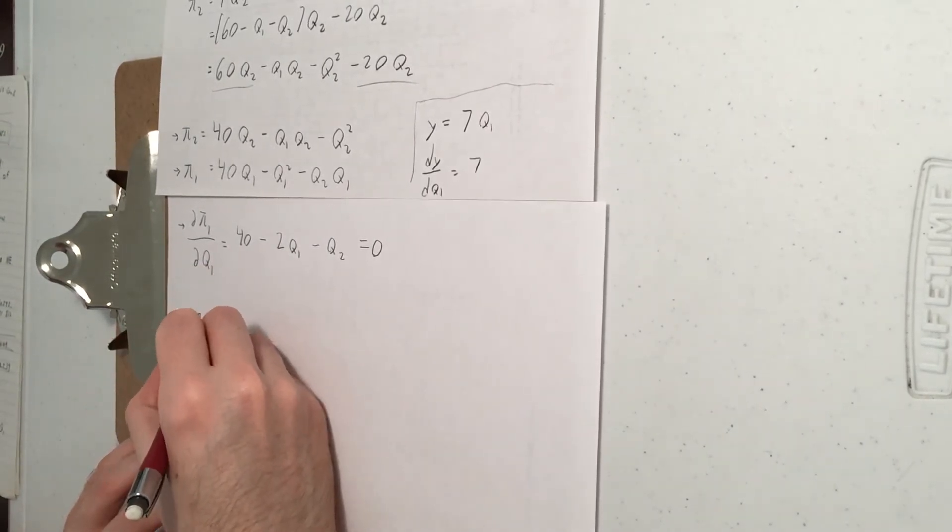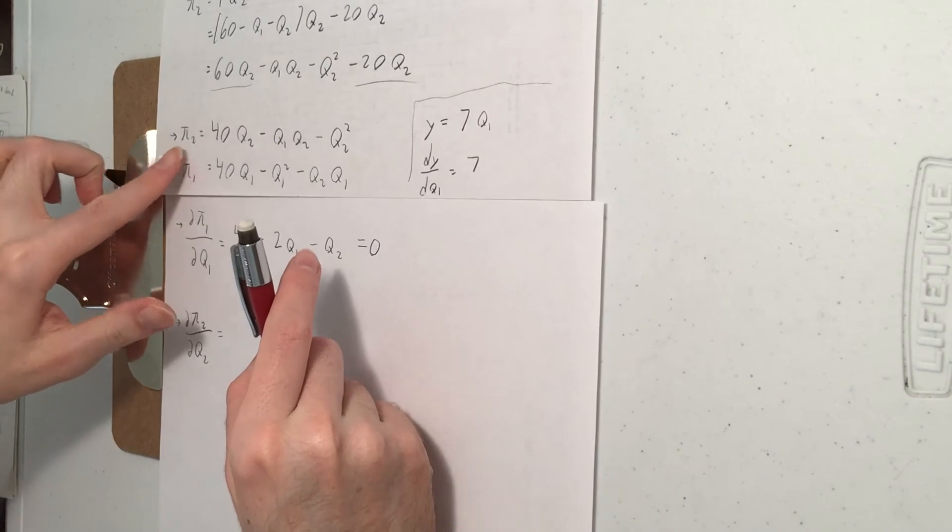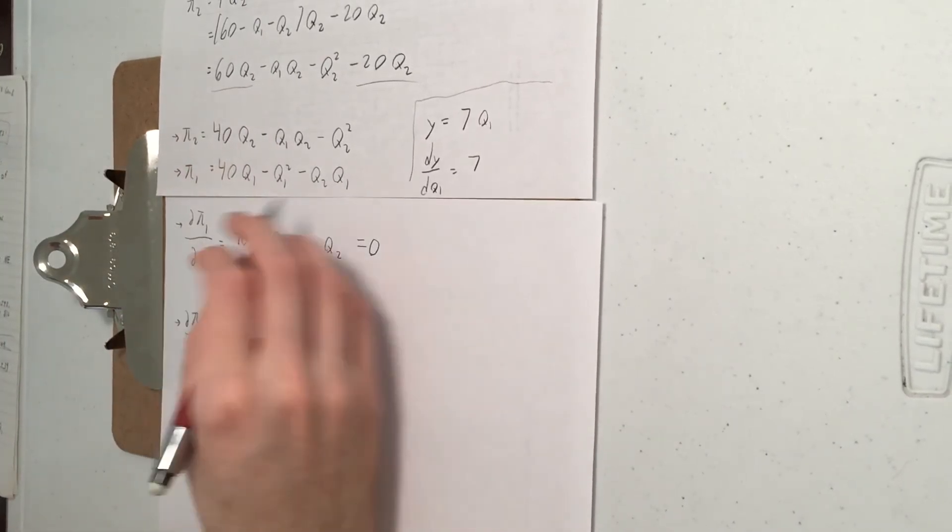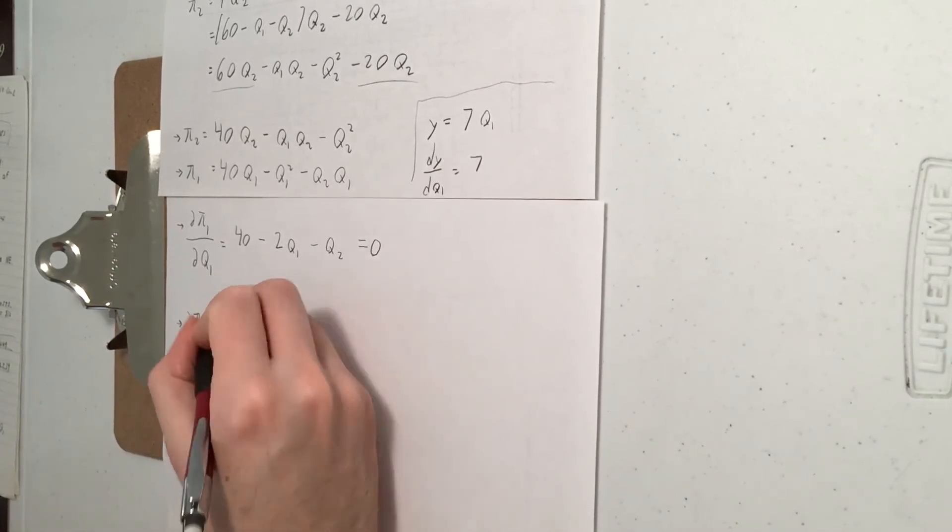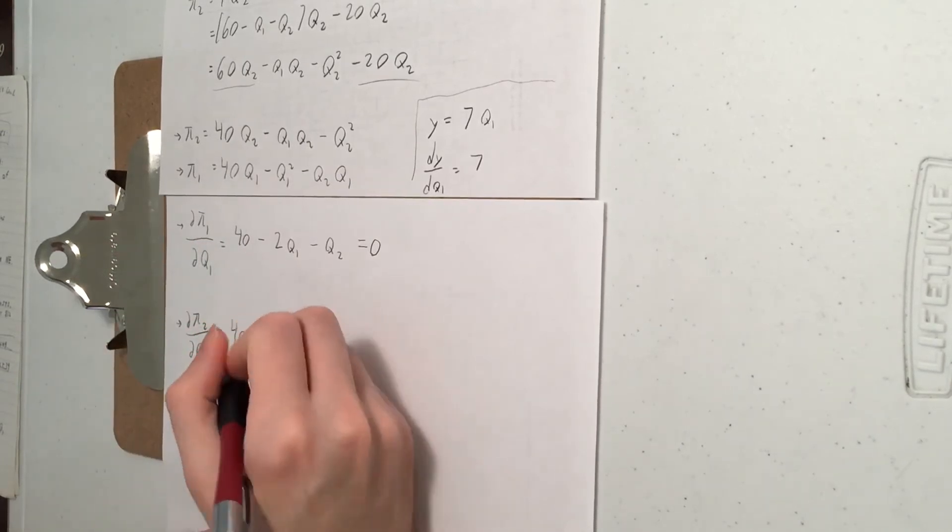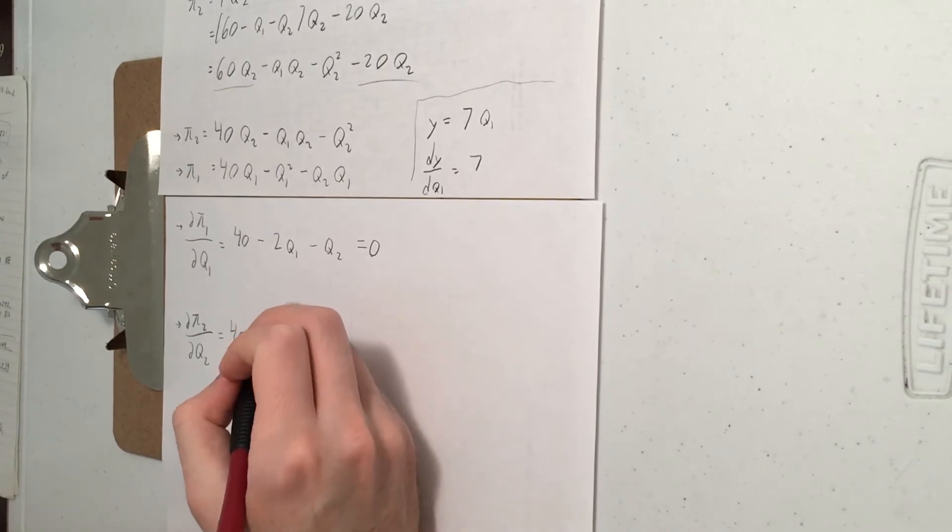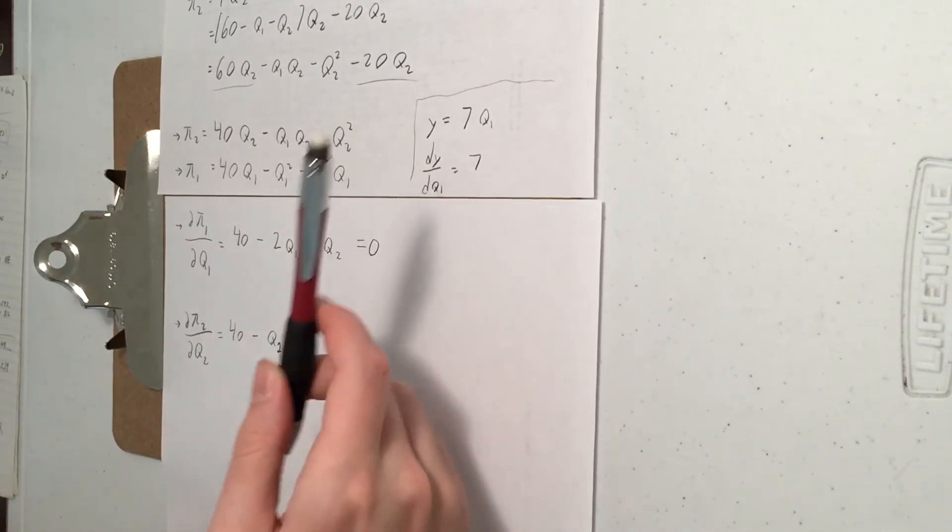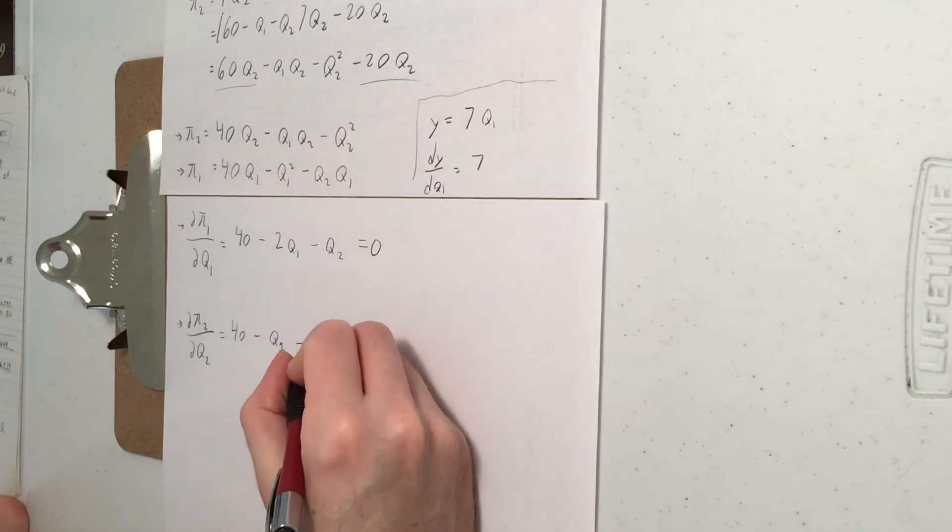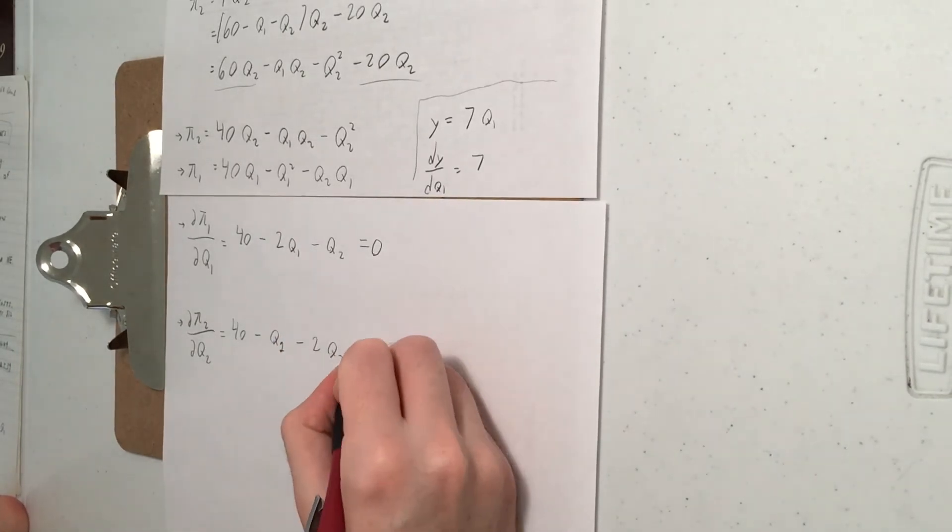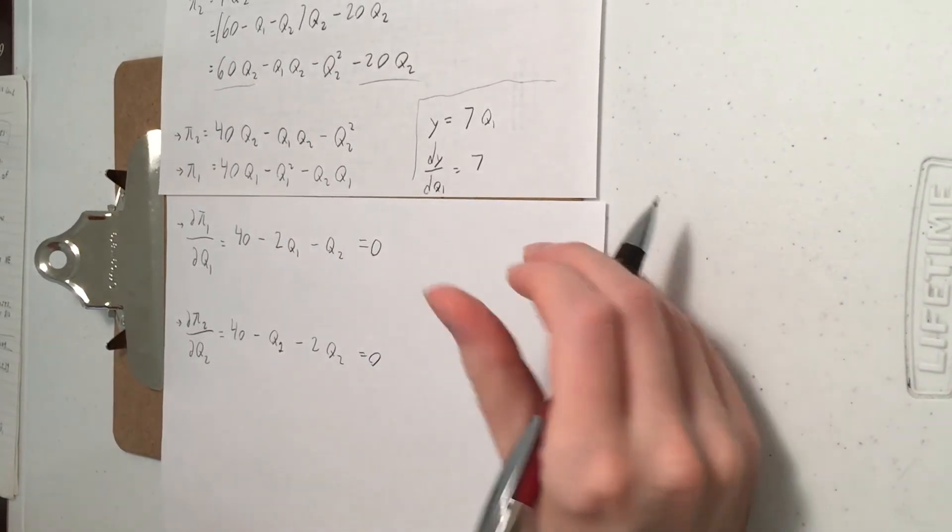Let's do the same thing for firm 2. So their payoff is over here, 40Q2 minus that stuff. So we take the partial derivative with respect to Q2. That gives us 40 for this first term minus Q1. So you're treating Q1 like a constant now. The derivative of Q2 squared is going to be 2Q2. We set that equal to 0 to maximize the payoff.